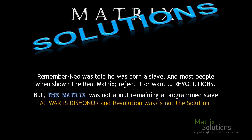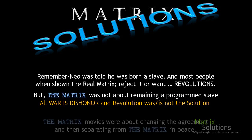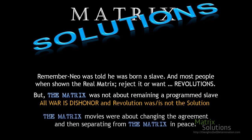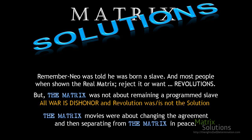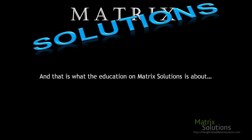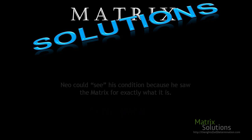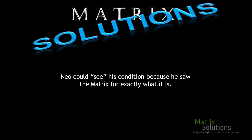Most people, when shown the real matrix, either reject it or want revolution. But the matrix was not about remaining a program slave — all war is dishonor and revolution was not the solution. The Matrix movies were about changing the agreement and then separating from the matrix in peace, and this is what the education on Matrix Solutions is about.